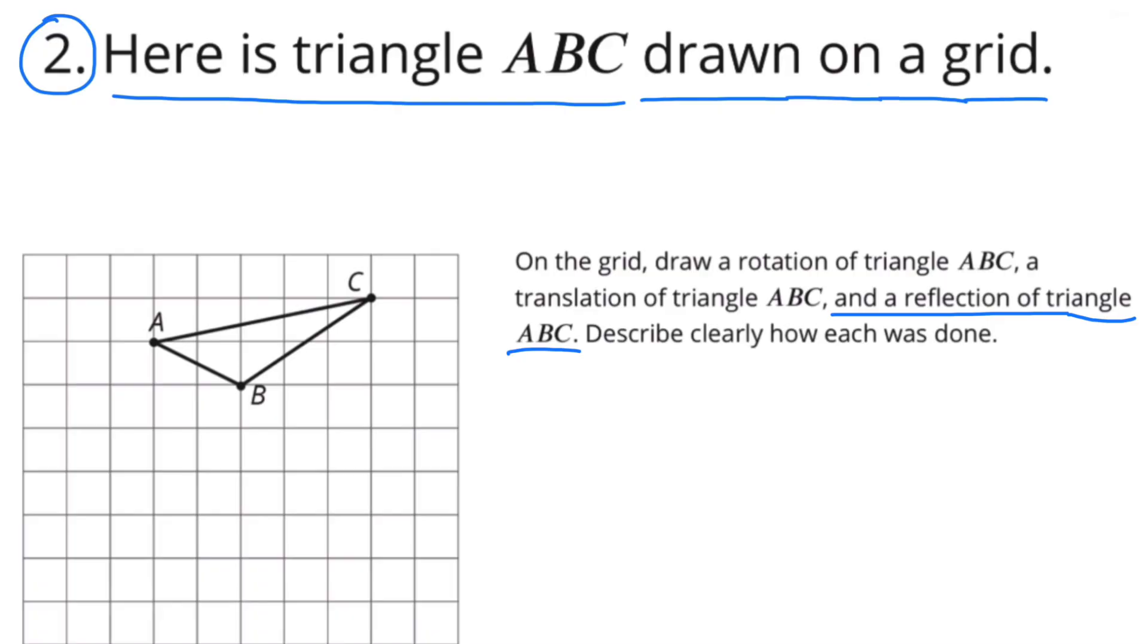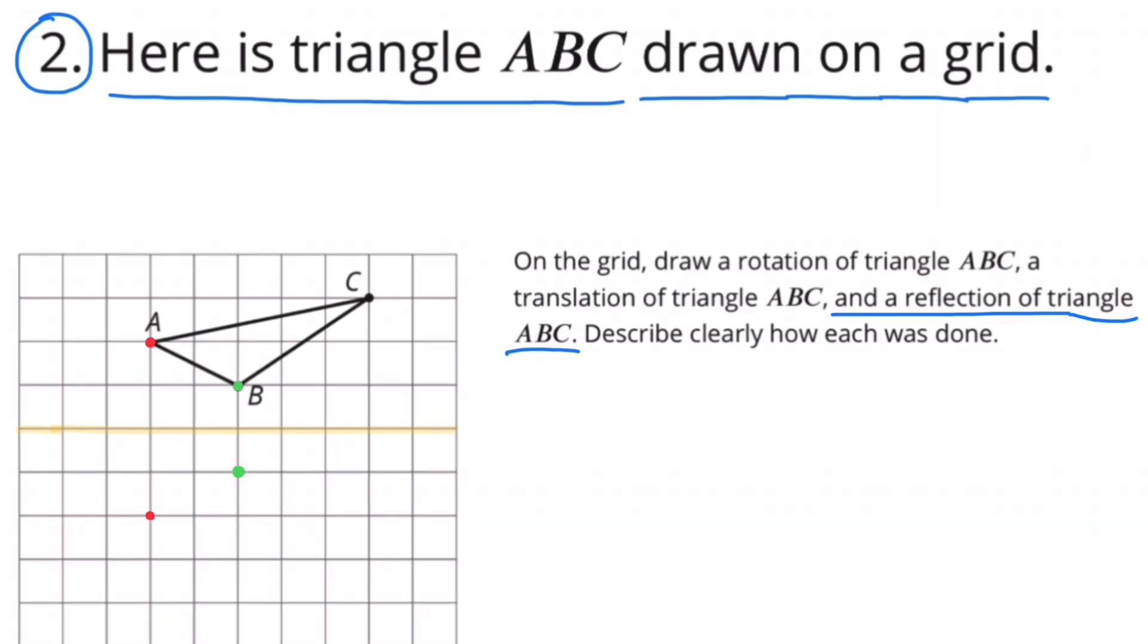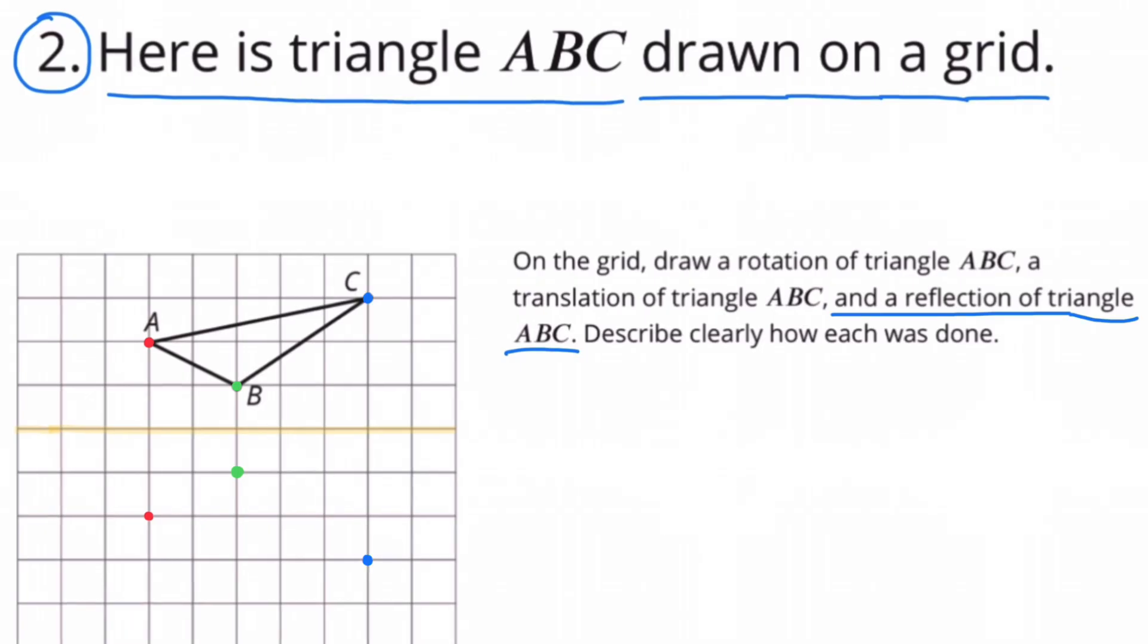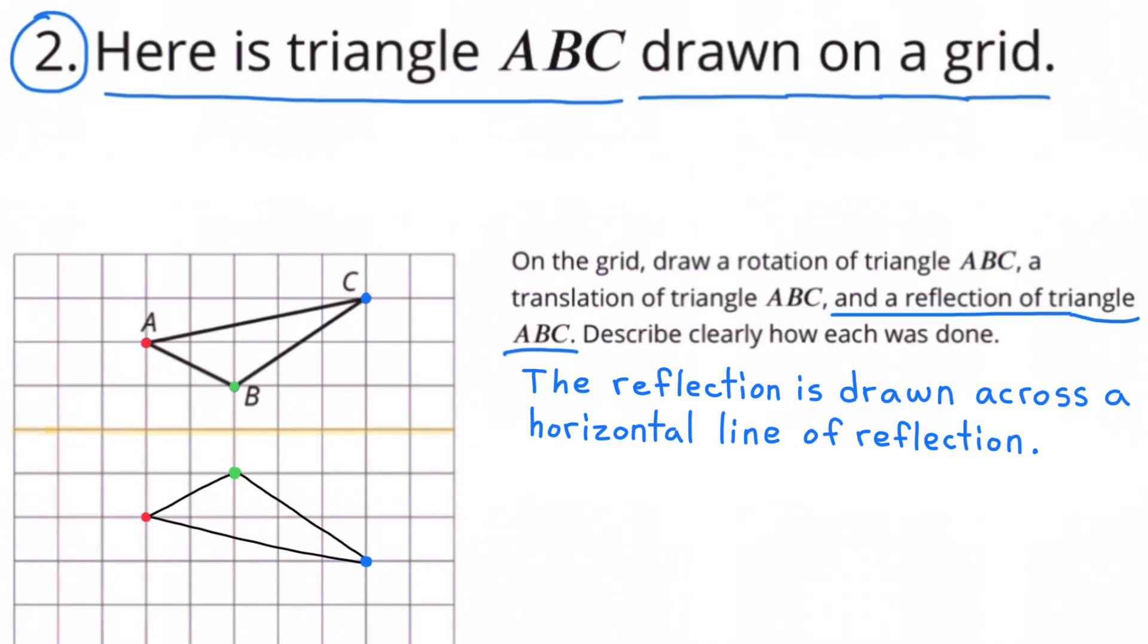Draw a reflection of triangle ABC. First, I've drawn a horizontal line, the line of reflection. Since point A is two units above that line, I'm going to put the reflection point for point A two units below the line. I'll do the same for B. B is one point above the line, so I'll place B one point below the line. And C is three points above the line, so I'll place point C three points below the line for the reflection. Here's a look at the reflection with all three sides to the triangle. The reflection is drawn across a horizontal line of reflection.